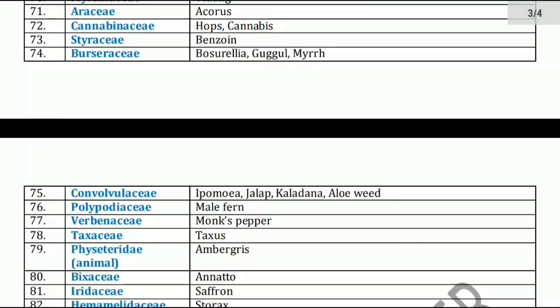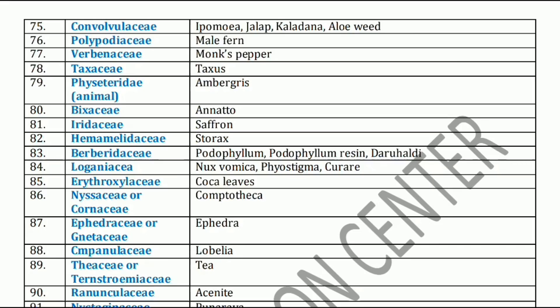These are carbohydrates. Next family is Convolvulaceae family. Convolvulaceae family has Ipomoeia, Jalap, Kaldana, and Aloe weed. Next, Polypodiaceae family. Polypodiaceae family has Male fern. Next, Verbenaceae family. Verbenaceae family has Monk pepper. Next, Taxaceae family. Taxaceae mainly includes Taxus, used as an anticancer agent — its main chemical constituent is used in cancer treatment.